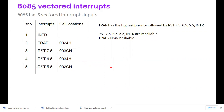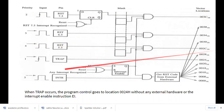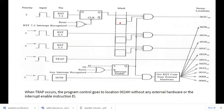Looking at the diagram, it shows clearly how the interrupts are connected. RST 7.5 is connected through an AND gate to a memory vector location — when RST 7.5 occurs, it goes to that memory location. Similarly for 6.5 and 5.5. TRAP, however, is directly connected to its memory location without going through any additional logic.